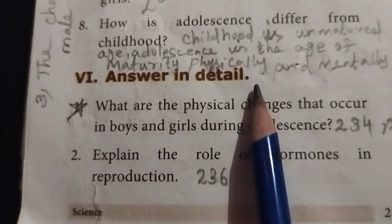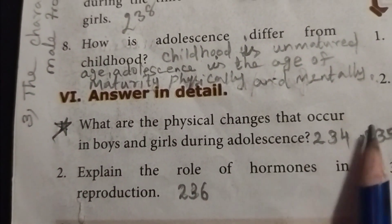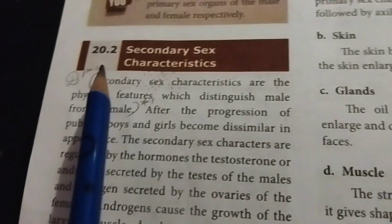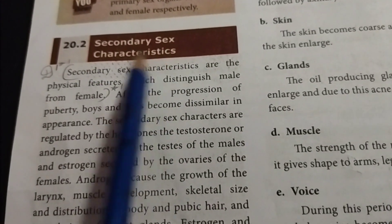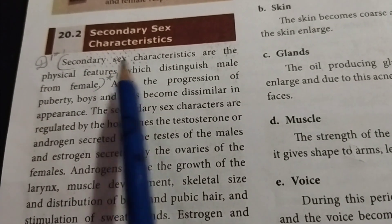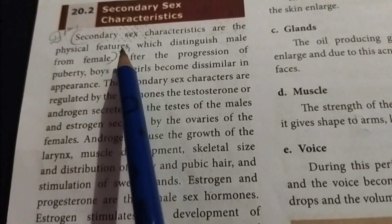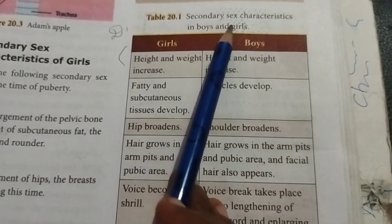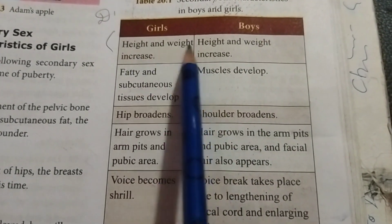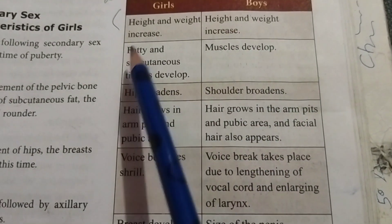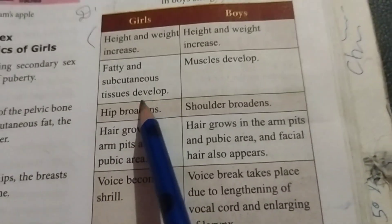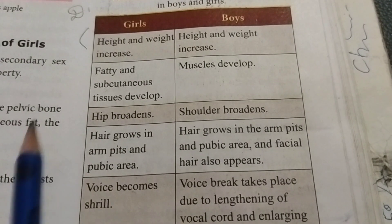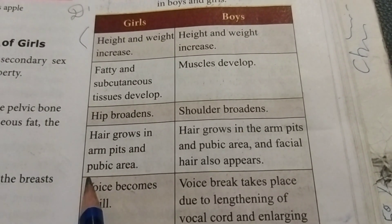Section 6: Answer in detail. Question 1: What are the physical changes that occur in boys and girls during adolescence? Take page number 234 and 235. This is an important question. Secondary sex characteristics are the physical features which distinguish male from female. Tabular column – Secondary sex characteristics in boys and girls: Height and weight increase in both. Girls develop fatty and subcutaneous tissues; boys develop muscles. Girls' hips broaden; boys' shoulders broaden.